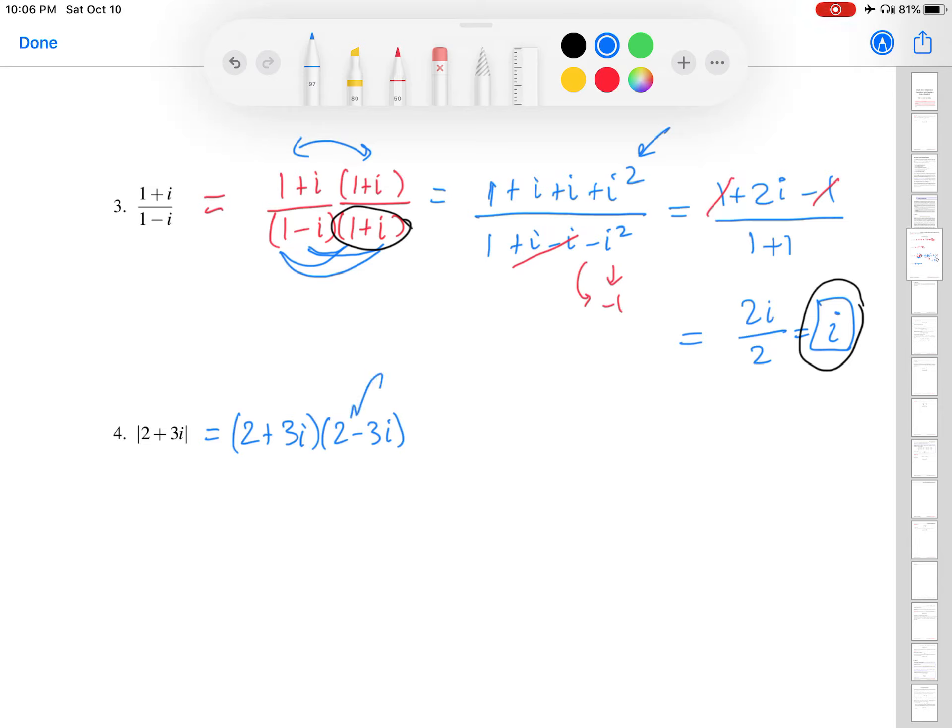So this is 2 plus 3i, and then I'm going to multiply it by the complex conjugate, which again is the opposite imaginary part sign. And then I will just multiply this out. So 2 times 2, that gives me 4. This part gives me minus 6i, and then this gives me plus 6i, and then this gives me minus 9i squared.